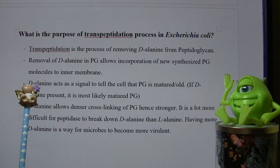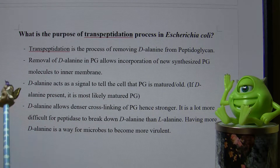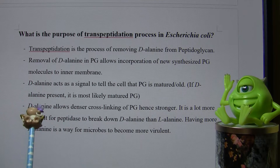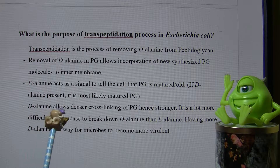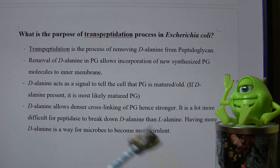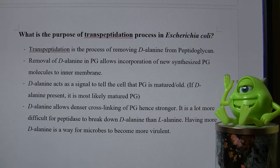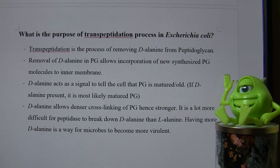D-alanine also acts as a signal to tell the cell that peptidoglycan is matured or old. If D-alanine is present, it means the peptidoglycan is most likely matured. D-alanine allows denser cross-linking of peptidoglycan, making it much stronger. This is because it is more difficult for peptidases to break down D-alanine than L-alanine. Having more D-alanine is another way for microbes to become more virulent, helping them survive longer inside a host and infect more parts.